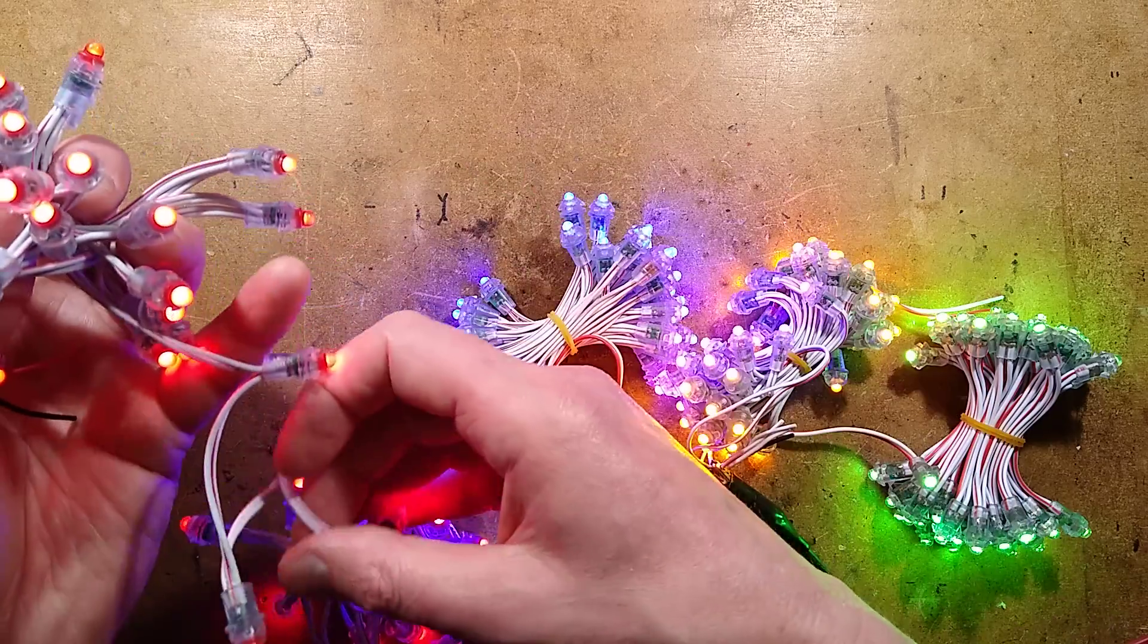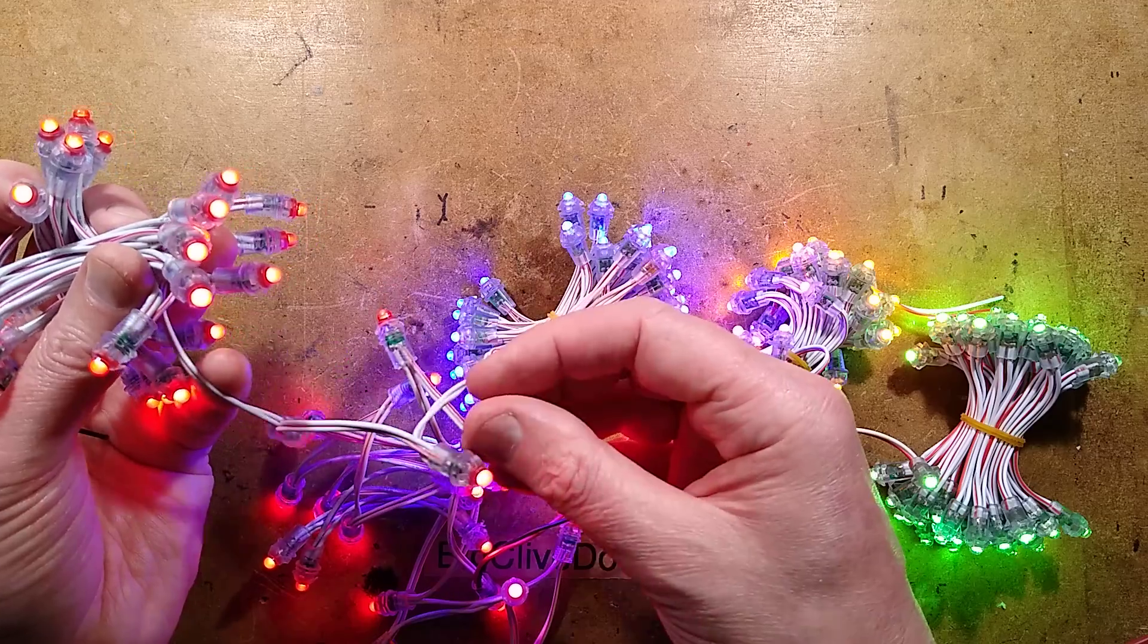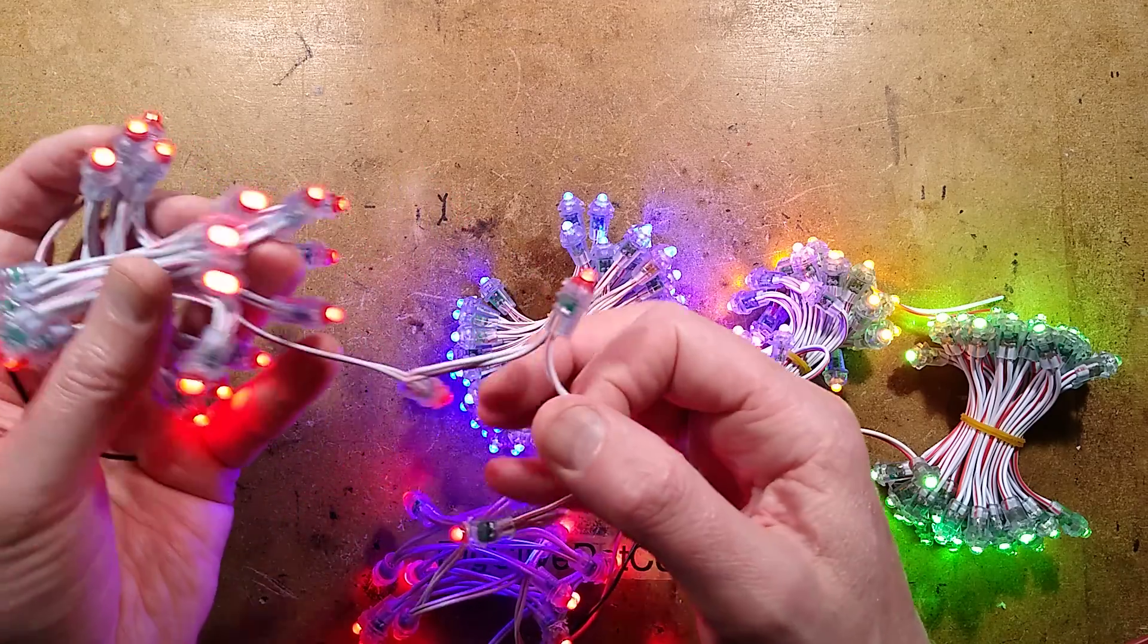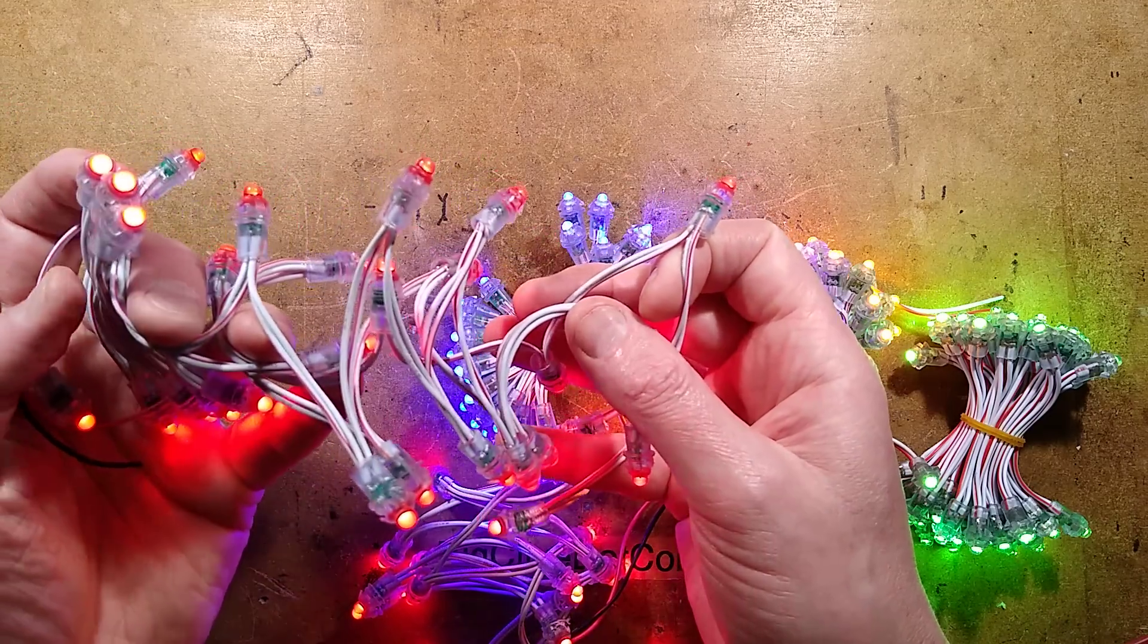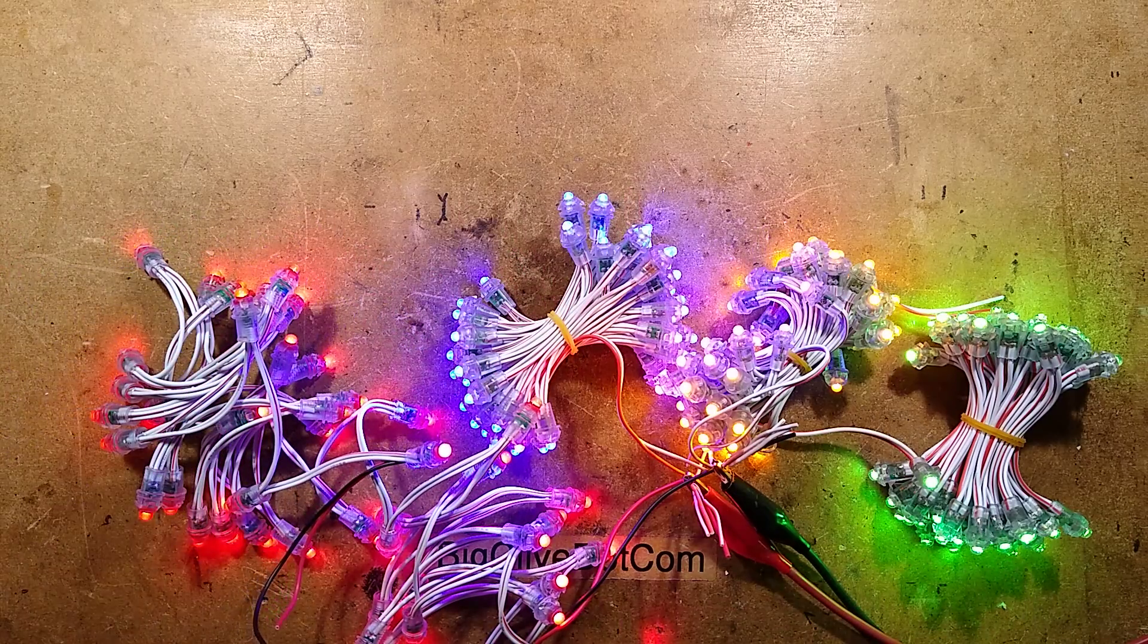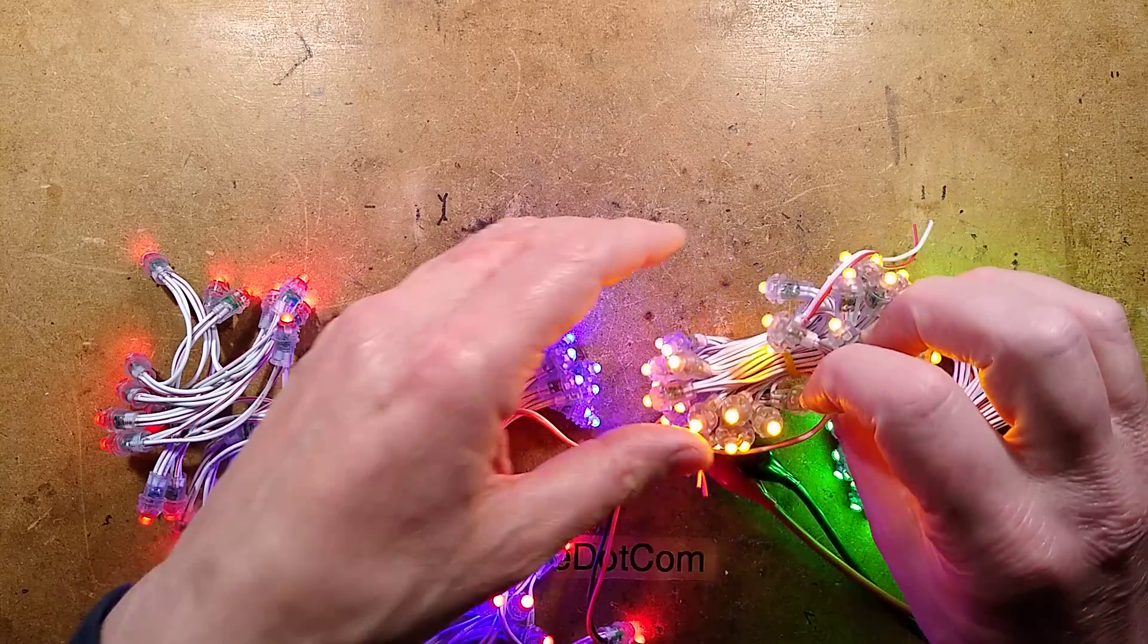Another advantage is the reduced current versus the 5-volt stuff. This runs at roughly about half the current, which means that technically speaking you can run longer strings off it without worrying about the voltage drop along that. So now we've seen them lit I'll show you before I go too far.